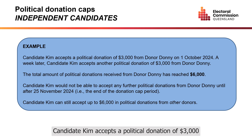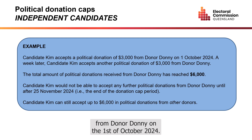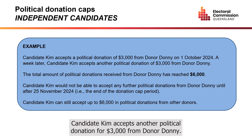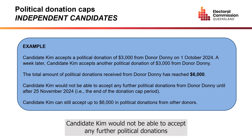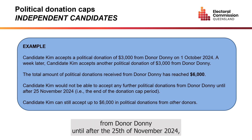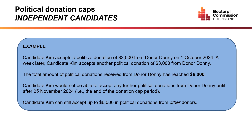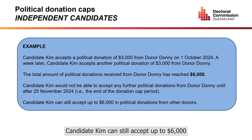Candidate Kim accepts a political donation of $3,000 from donor Donnie on the 1st of October 2024. A week later, Candidate Kim accepts another political donation of $3,000 from donor Donnie. The amount of political donations received from donor Donnie has now reached $6,000. Candidate Kim would not be able to accept any further political donations from donor Donnie until after the 25th of November 2024, the end of the donation cap period. Candidate Kim can still accept up to $6,000 in political donations from other donors.